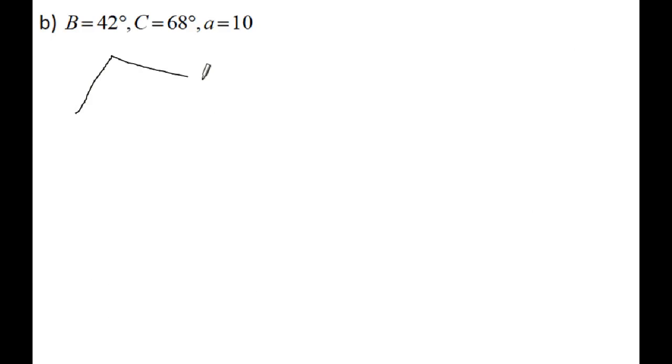For the next example, I'll sketch out a generic triangle again. Angle B is 42 degrees, angle C is 68 degrees, and side A is 10. For Law of Sines, you need an angle and its corresponding side. This is the only side we have, so we need its corresponding angle A. Since I know angles B and C, I can find angle A: 180 minus 68 minus 42 equals 70 degrees. Now I have angle A and side A, so I can set up the Law of Sines.